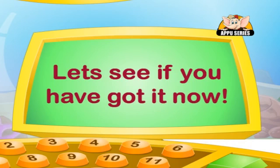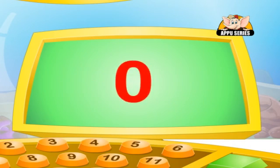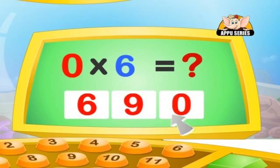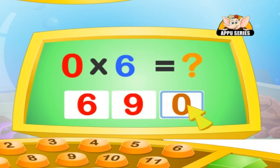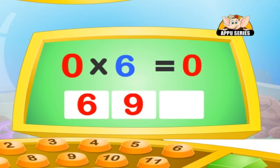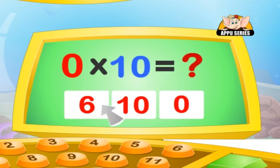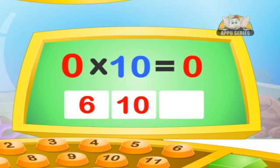Let's see if you have got it. What is 0 into 6 equal to? 0 — exactly. And 0 into 10? The same answer: 0.